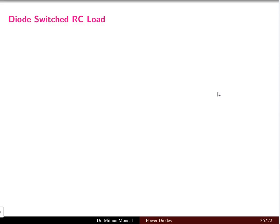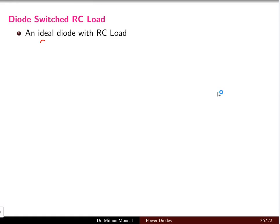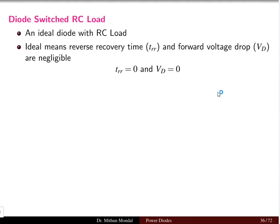Welcome to the next lecture in power electronics. We were discussing power diodes. In this lecture we will focus on circuits which involve diodes and an RC load — that is, a resistor and a capacitor. For an ideal diode with an RC load, there are no losses. The ideal diode means the reverse recovery time and the forward voltage drop are both negligible — reverse recovery time is zero and forward voltage drop is zero.